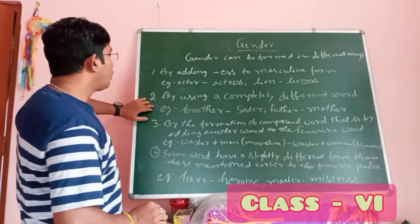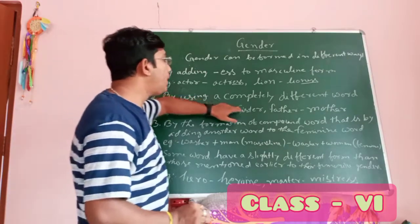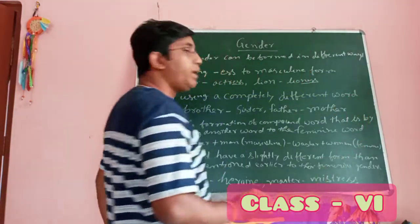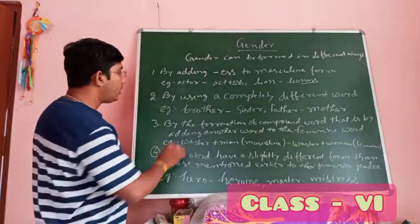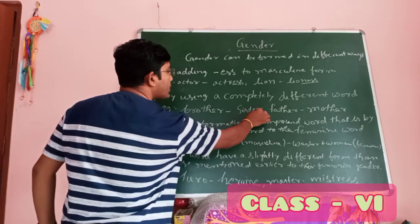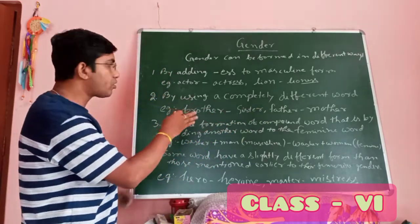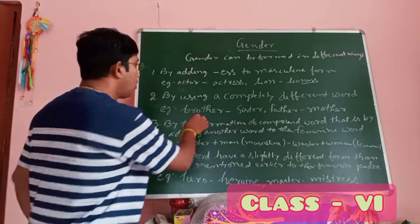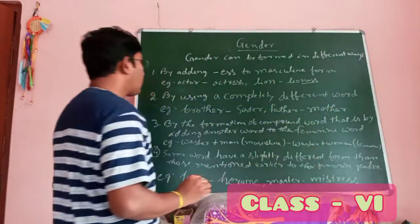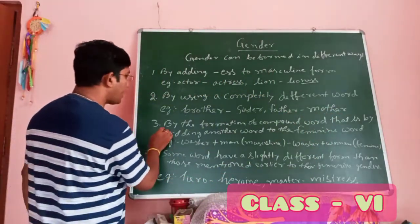Rule two: you can form the feminine by using a completely different word. Like 'brother' — masculine, 'sister' — feminine. Complete change. 'Father' becomes 'mother'. There is no similarity between the two words at all.